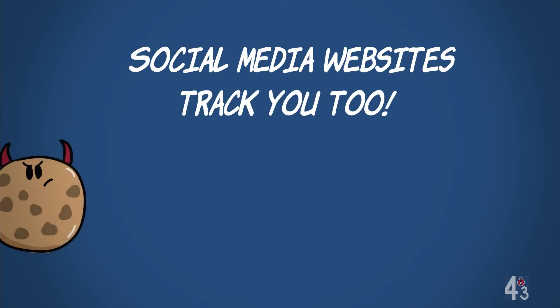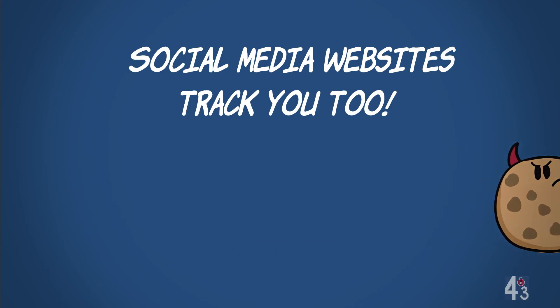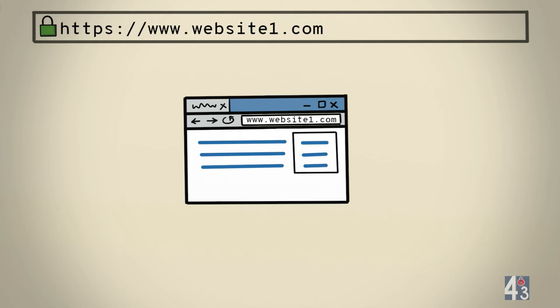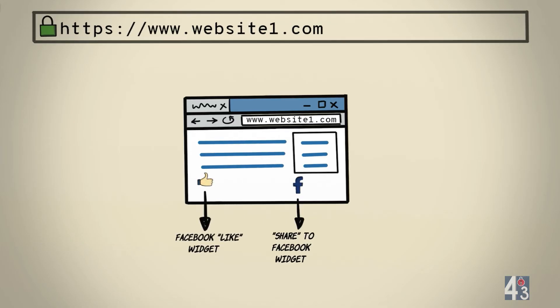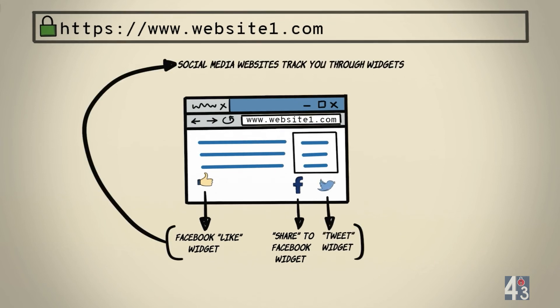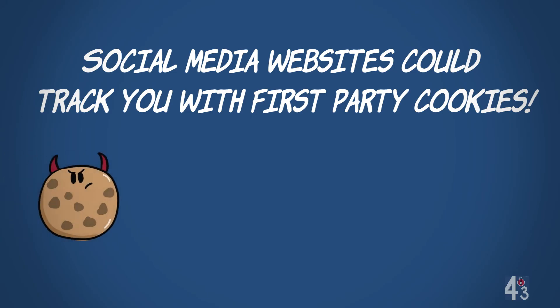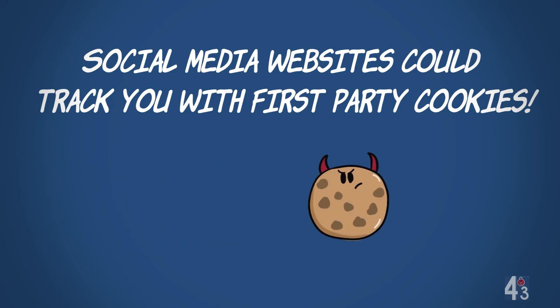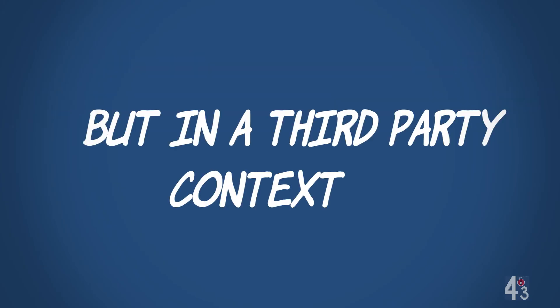Social media websites also perform cross-site tracking of your browsing. You would have noticed numerous websites with social media widgets, like the Facebook like or share button or the Twitter tweet button. Social media websites could track you via these widgets. However, social media websites track you with a first-party cookie, but in a third-party context.